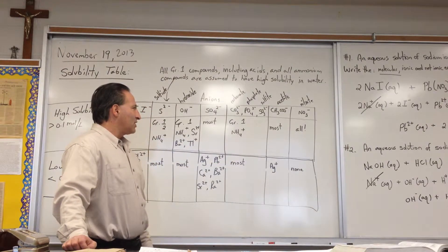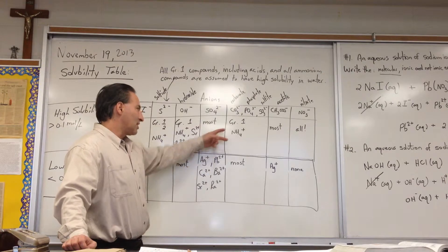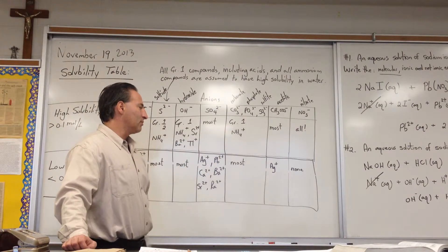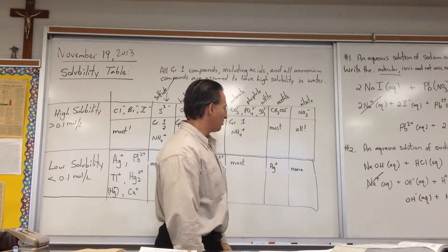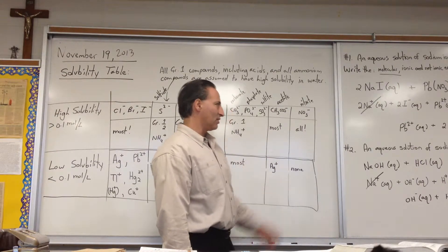Most carbonates, phosphates, and sulfites are insoluble, with the exception of group 1 and ammonium. Silver acetate is insoluble. And none of the nitrates are insoluble.